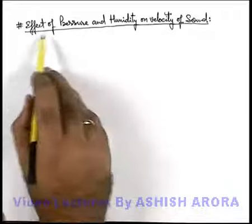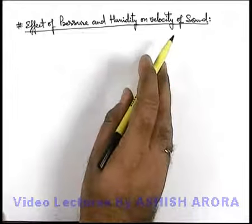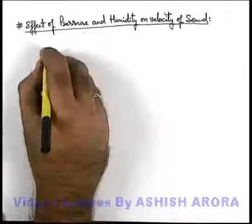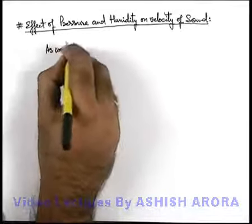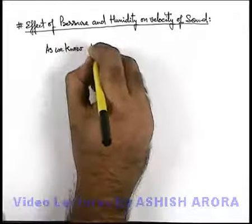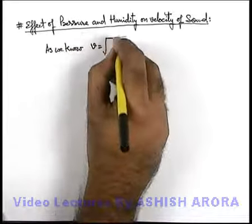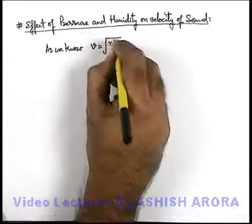Now we'll study the effect of pressure and humidity on velocity of sound. As we've just now studied, sound velocity can be written as root of gamma P by ρ.